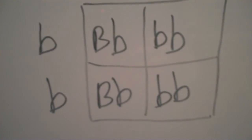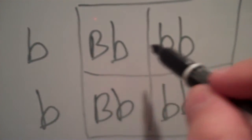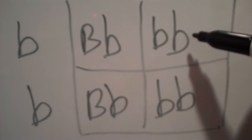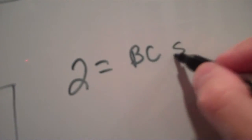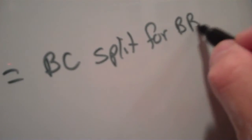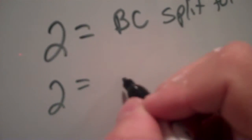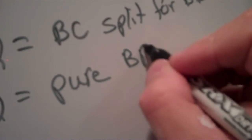Now what we have here is we have a split blue check. We have a pure blue bar. Split blue check and pure blue bar. So we get two blue checks split for blue bar, and we get two pure blue bars.